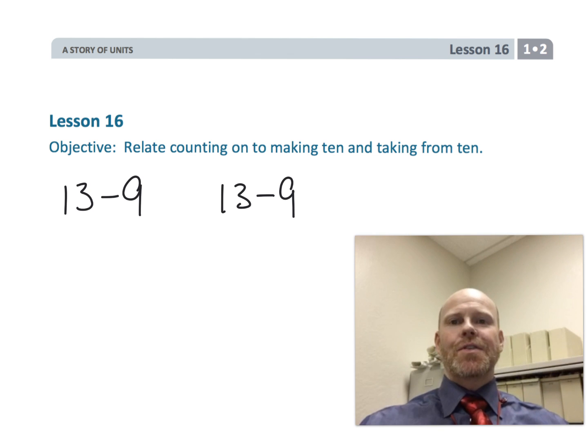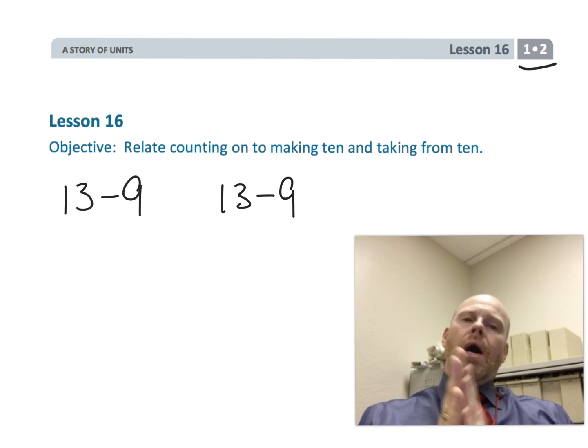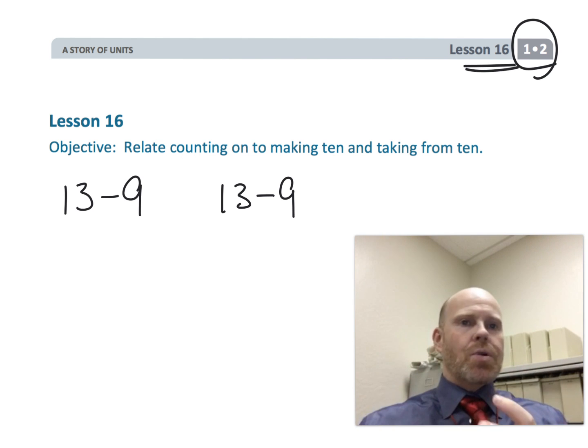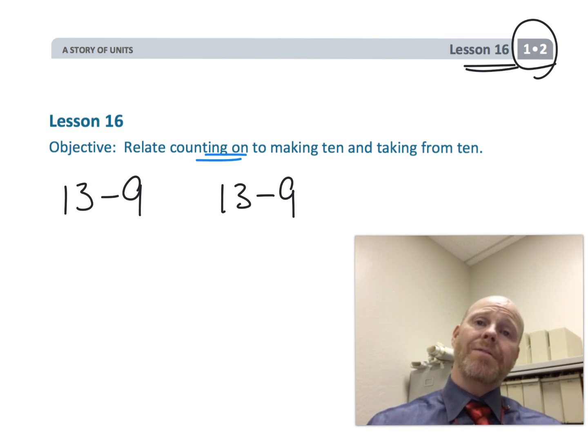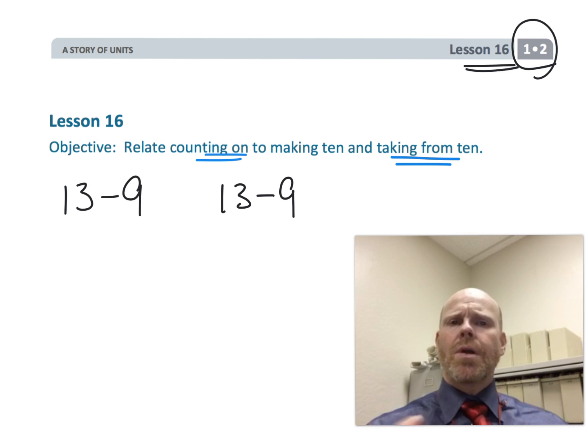All right, this is first grade module 2 lesson 16. In this lesson our students are going to continue subtracting 9 from the teen numbers, and we're really going to focus on two strategies: the count on strategy and the taking away from 10 strategy.